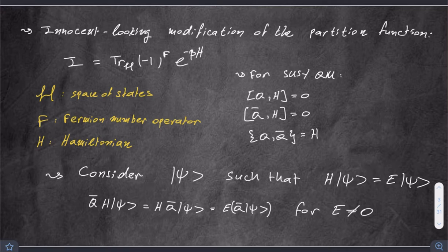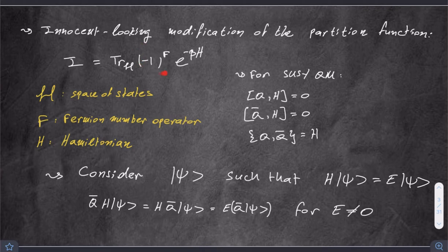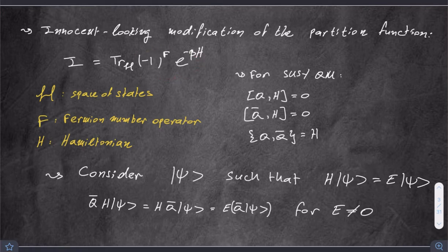So how do we define this index? This index is a seemingly innocent-looking modification of the standard definition of the partition function. I will denote the index by I. It's defined as follows: your partition function will be the trace over the Hilbert space of states of your theory of e to the minus beta H, where beta is one over the temperature and H is the Hamiltonian. The difference between the index and the partition function is this factor of minus one to the F, where F is the fermion number operator — odd for fermions and even for bosons — making them contribute with opposite signs.